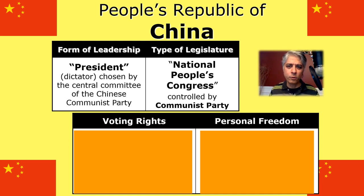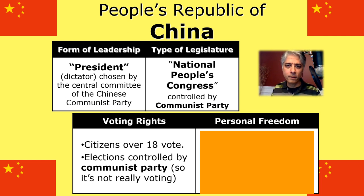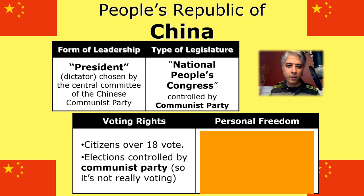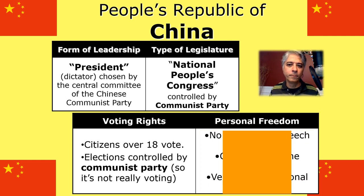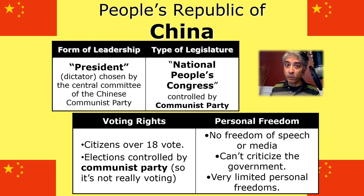Interestingly, you do technically get to vote in China. However, those elections are all controlled by the communist party — it's a one-party state. While you technically get to vote, who's on the ballot is determined by the communist party, so it's not really voting because you don't get to choose who you're voting for. In terms of personal freedom, there's no political freedom, no freedom of speech, no freedom of the media, and you're not allowed to criticize the government. Remember what happened in Tiananmen Square. Personal freedoms are very, very limited in China.